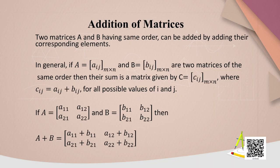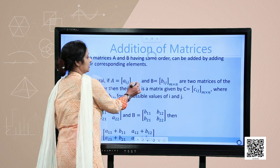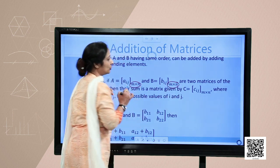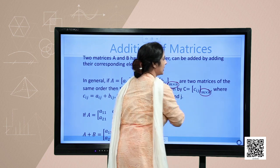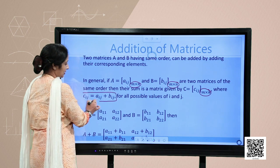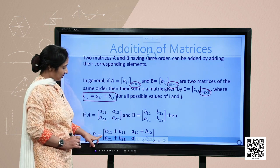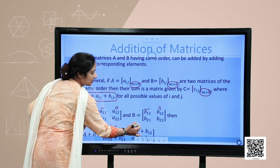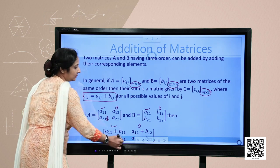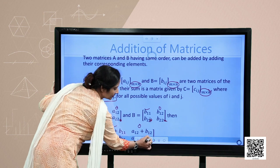Two matrices A and B having the same order can be added by adding their corresponding elements. In general, A equals A-ij of order m by n and B equals B-ij of order m by n. You must take care that the orders of both matrices must be equal. Only then can you add them to obtain another matrix C, also of order m by n, where C-ij is obtained by adding the corresponding elements of the matrices.